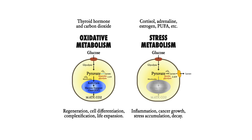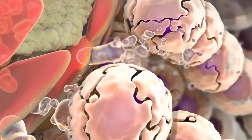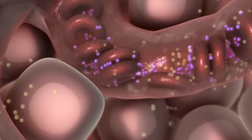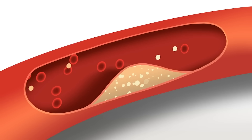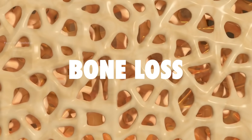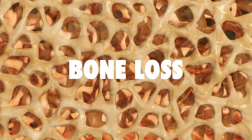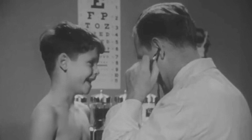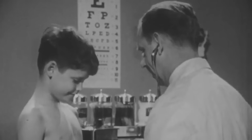When thyroid hormone and carbon dioxide are deficient, glucose is inefficiently oxidized, leading to inflammation, insulin resistance, buildup of cholesterol, soft tissue calcification, and an overall inability to oppose stress. This is known as hypothyroidism.